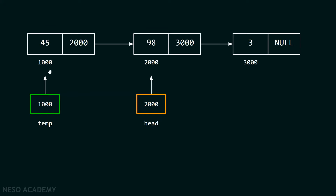If head is still pointing to the node being deleted, then it does not make any sense. The head pointer must point to the second node of the list, because after deleting this node, that second node becomes the first node of the list. That is why head pointer must always point to that node after deleting this node.